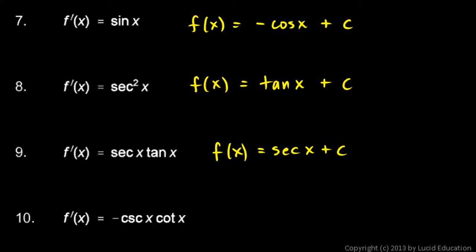Number ten: f prime is negative cosecant x cotangent x. What function has negative cosecant x cotangent x as its derivative? If you properly learned your derivatives of trig functions, then f of x is the cosecant function, because the derivative of the cosecant function is negative cosecant x cotangent x.